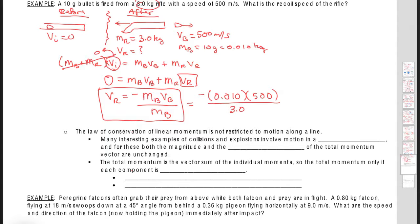Okay, and so we plug that into our calculator, we get 0.01 times 500 divided by 3 and find that you get a velocity of 1.67, excuse me, negative 1.67. And so that would be the recoil velocity of the rifle. Okay, so it's going to kick back.